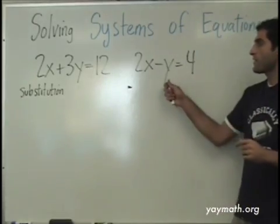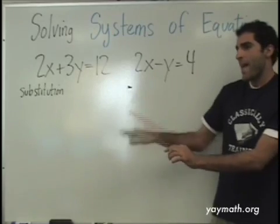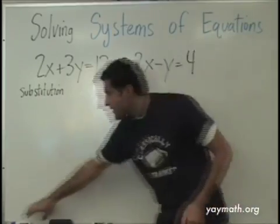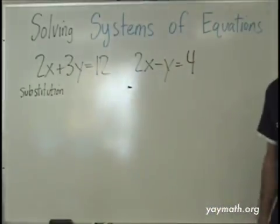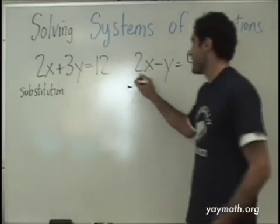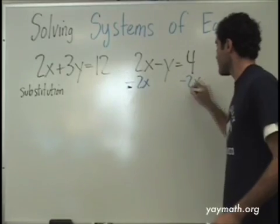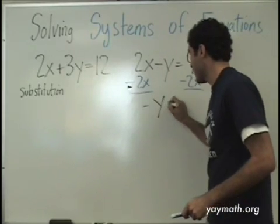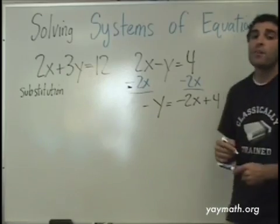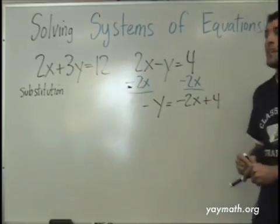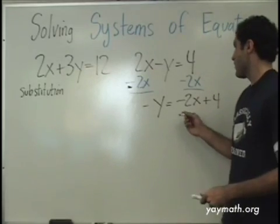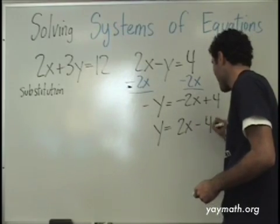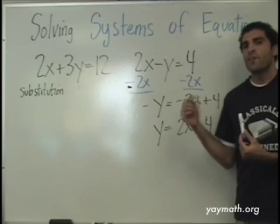So let's isolate the y. You subtract two x from both sides — so negative two x plus four equals negative y. Rearranging: negative y equals negative two x plus four. Then multiply both sides by negative one, leaving y equals two x minus four. Can I do the substitution? Yes — I love volunteers.